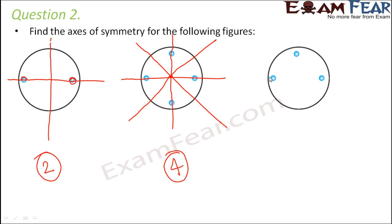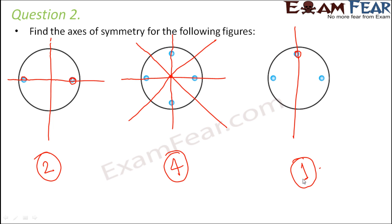For the third circle, one possible line of symmetry passes exactly through the center of the single hole, creating two halves that are mirror images of each other. So this circle has only one line of symmetry. Depending on the image, you have to decide how many axes of symmetry exist.